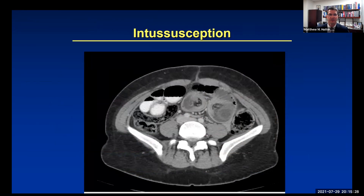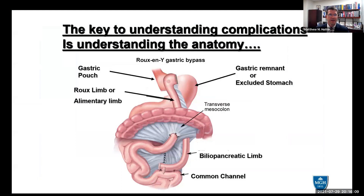Intussusception is common at the jejuno-jejunostomy and shows a target sign on imaging—a piece of bowel going completely within another. It can be a benign incidental CT finding or an emergency. Anatomically, you can sometimes decompress and milk them out, then consider pexing them. Sometimes they need resection because they're ischemic. Reconstructing a jejuno-jejunostomy is challenging and usually takes two anastomoses. In summary, the key to understanding complications is knowing the anatomy of the Roux-en-Y gastric bypass—know where the limbs are and know how to fix them.